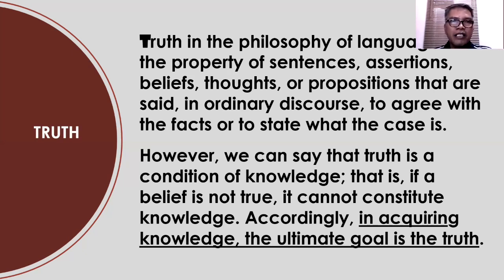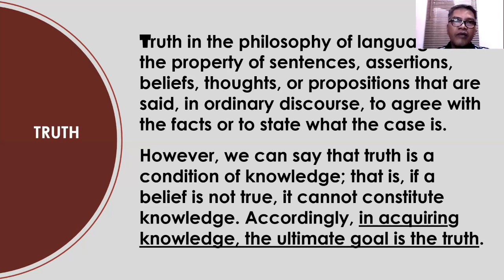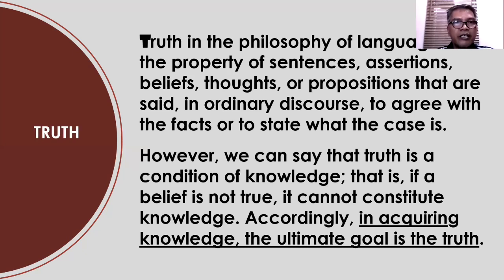For example, if you didn't yet know that 3 plus 3 is equal to 6, and your friend told you that 3 plus 3 is equal to 9 — so you gained knowledge, but the question is: is that knowledge based on facts? Is it true? It is false. Therefore, it is not knowledge — it is not real knowledge. A real knowledge is true. That's why knowledge and truth work together. Truth is a condition of knowledge: if a belief is not true, it cannot constitute knowledge, because in acquiring knowledge the ultimate goal is the truth.